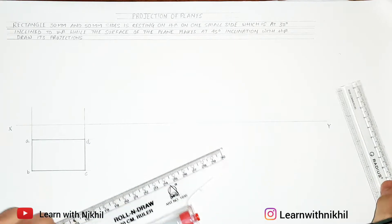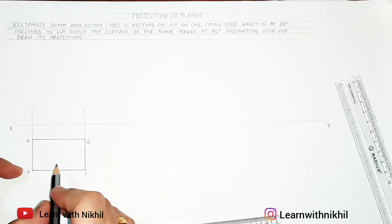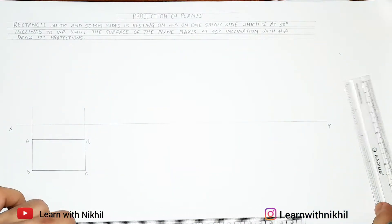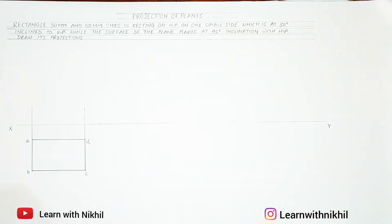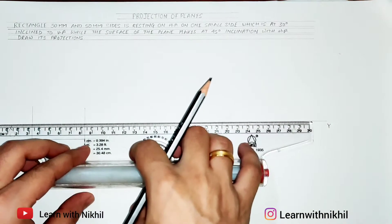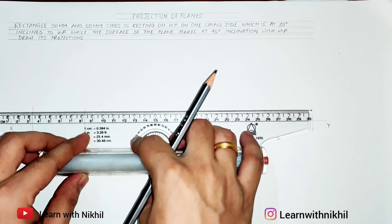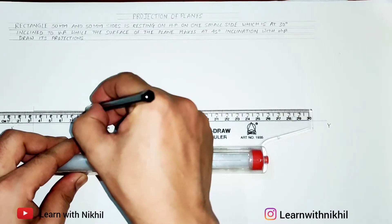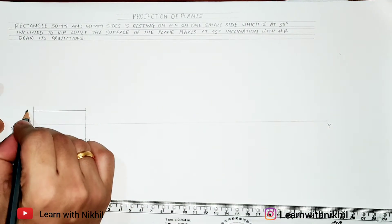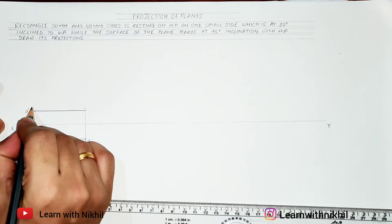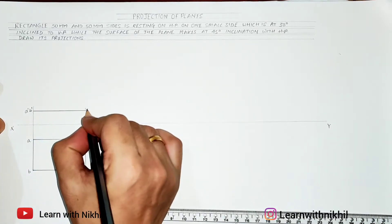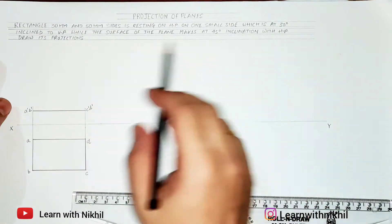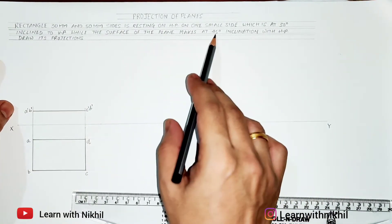Now its projection in the front view will be a straight line. You can draw it on the horizontal plane or a bit above it, as this is just the initial stage. This will be labeled a-dash, b-dash, c-dash, and d-dash respectively. This completes the top view of the rectangle.